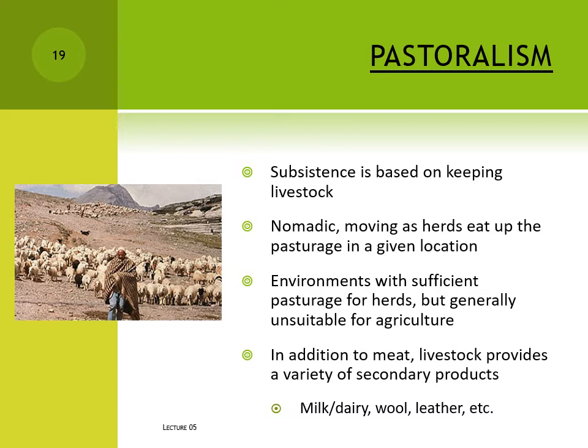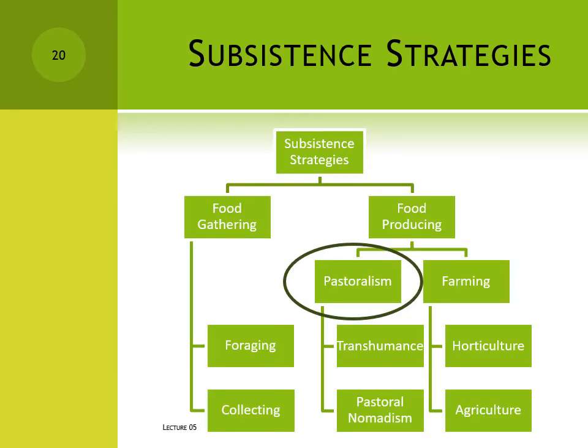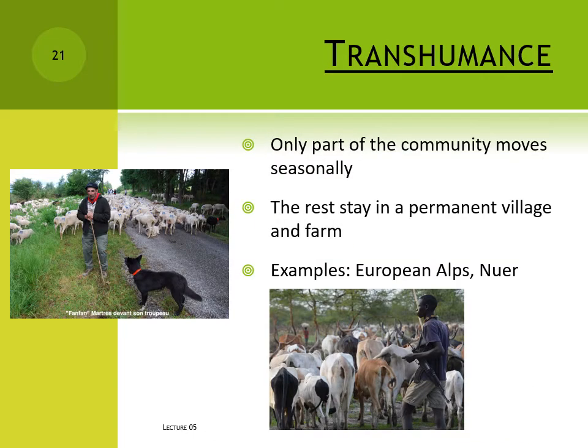However, people cannot survive on just animal food sources. We are biologically omnivores and we require some vegetable foods to live. Pastoralists must make arrangements to secure those vegetable foods somehow. In places where the landscape is productive enough to allow for some farming, they may take the route of transhumance – where only part of the population moves with the herds seasonally and the others farm. This is the pattern practiced in much of the European Alps in the past and in the Sudan among such groups as the Nuer.